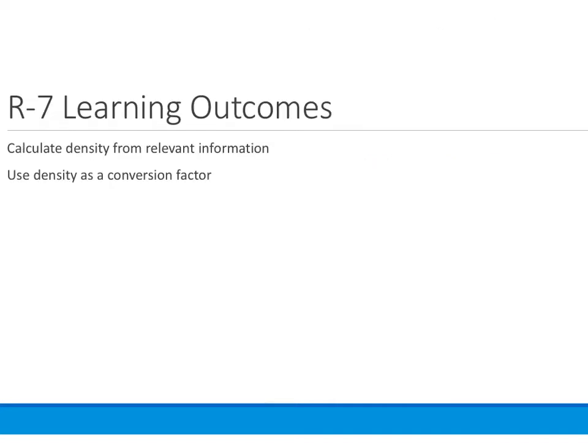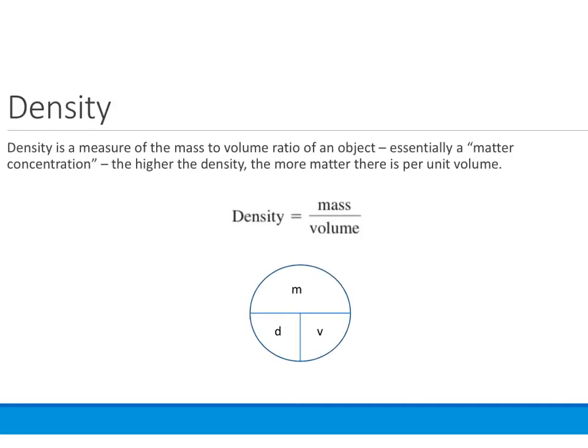In this section, we're going to use density to calculate density from relevant information and to use density as a conversion factor. Density is a measure of the mass-to-volume ratio of an object. It's essentially a matter concentration. The higher the density, the more matter there is per unit volume. And we have an equation, density equals mass over volume.